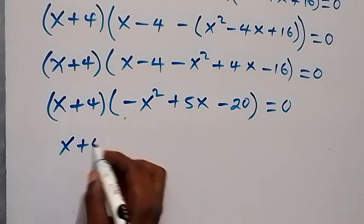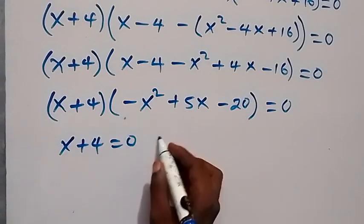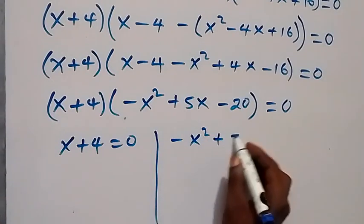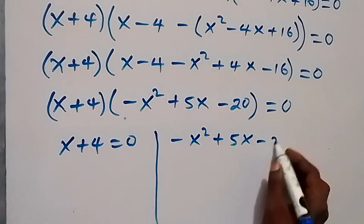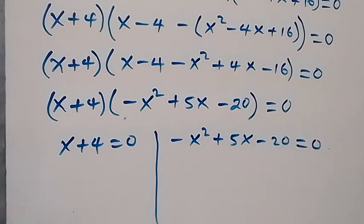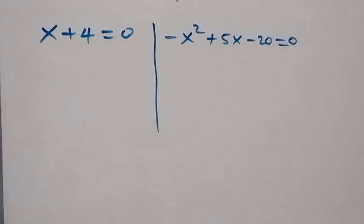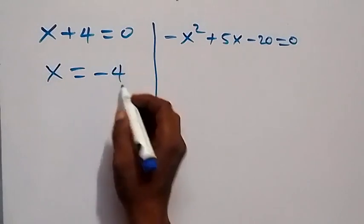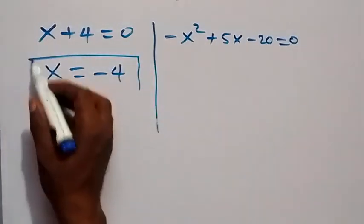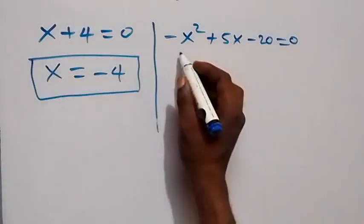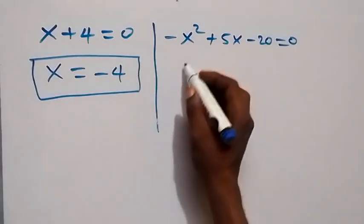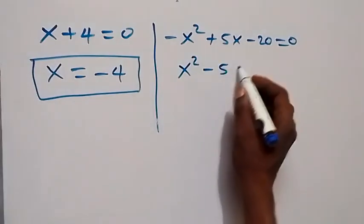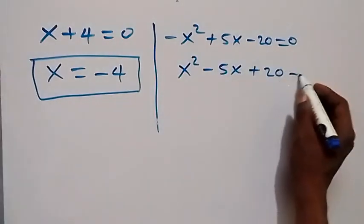We have two possible cases: x plus 4 equals 0, or minus x squared plus 5x minus 20 equals 0. From the first case, x equals minus 4, which is one solution. For the second case, multiplying through by minus 1, we get x squared minus 5x plus 20 equals 0.